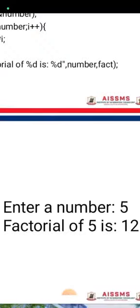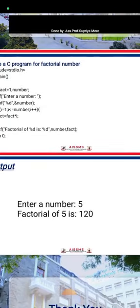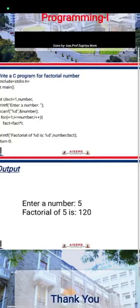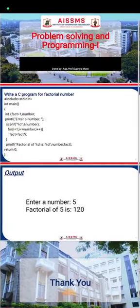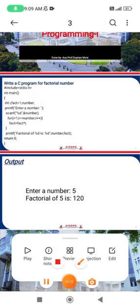The output of the program: enter a number — suppose we enter five — the factorial of five is 120. That is five into four into three into two into one equals 120. Similarly, one into two into three into four into five also gives 120, because factorial starts from one. This is the simple logic of the factorial number program. Thank you so much — we will continue in the next video.